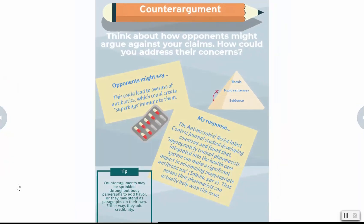Finally, we have counter arguments. These are important because they allow your reader to see that you've thought about all sides of the issue and allows you to address concerns your readers might have. For example, opponents might say this could lead to overuse of antibiotics, which could create superbugs immune to them. My response is again using evidence: the Antimicrobial Resistance and Infection Control journal studied developing countries and found that appropriately trained pharmacists integrated into the health care system can make significant impact on minimizing inappropriate antibiotic use.